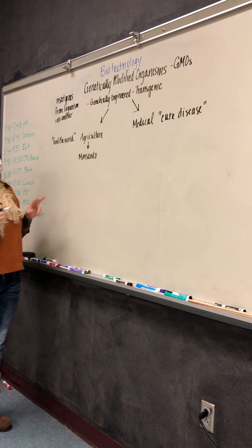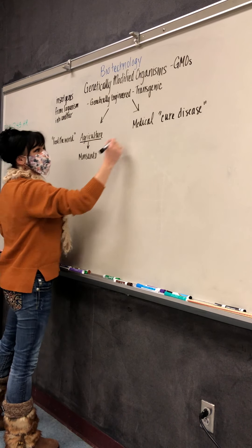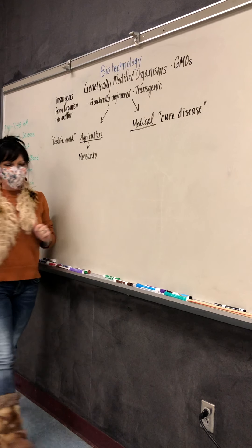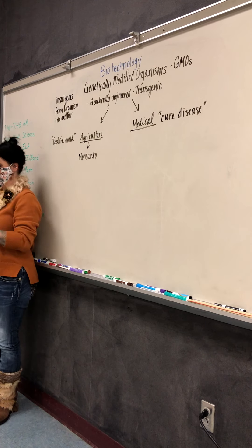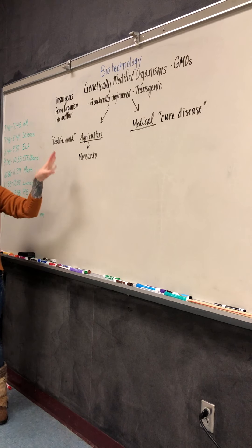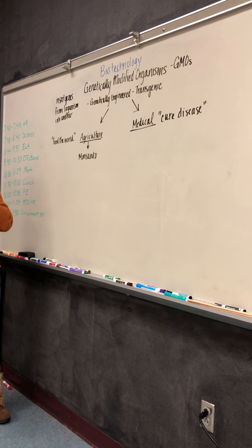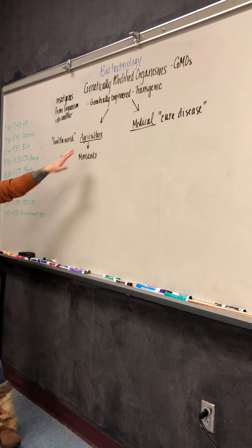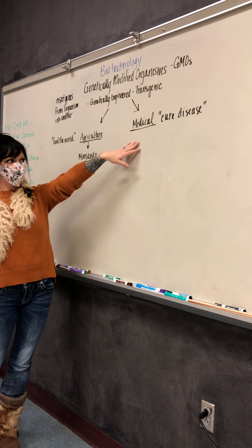They do it for two reasons. There's an agricultural reason and a medical reason. And then they've just got some weird ones where they've played around with stuff. But these are the main two branches of genetic modification: agriculture and medical.